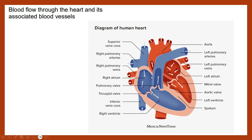The two chambers that sit at the top of the heart are the atria, and the two at the bottom are ventricles. So: right atrium, left atrium, right ventricle, and left ventricle.